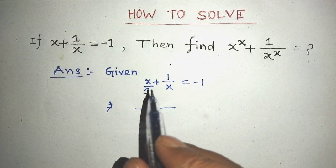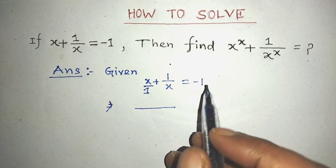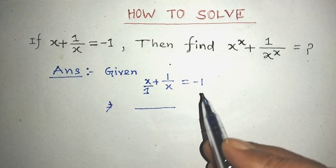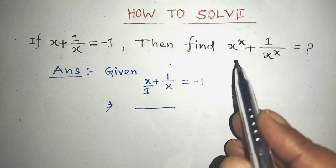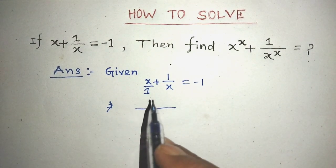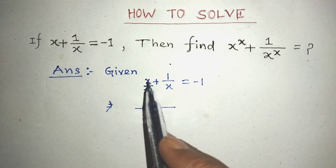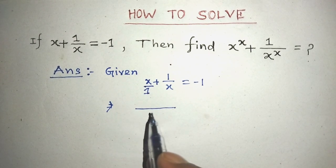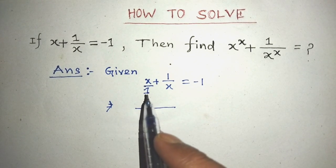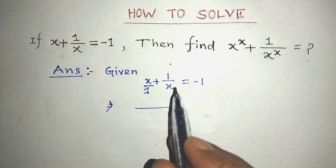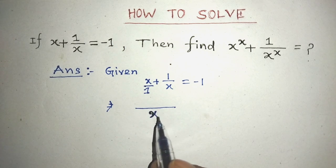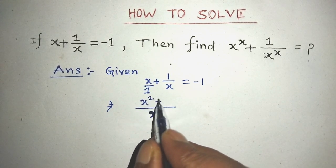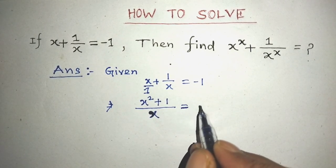Our given algebraic equation is x plus 1 over x is equal to minus 1, and we have to find the value of x to the power x plus 1 over x to the power x from this equation. To find the value of this expression, on the left hand side we have to simplify x plus 1 over x. In the first term, in the place of denominator there is no number, so we take 1 in the place of denominator. Then we write the division line, and in the place of denominator we write the LCM of 1 and x, which is x. In the place of numerator, we write x squared plus 1, equal to minus 1 on the right hand side.